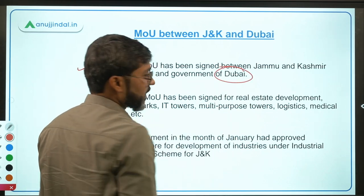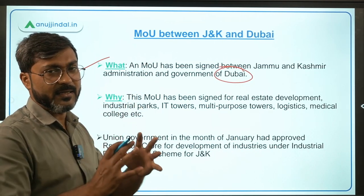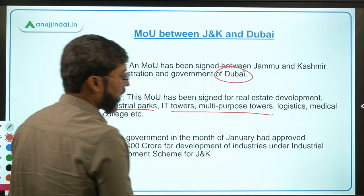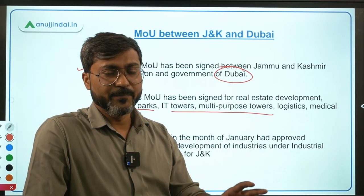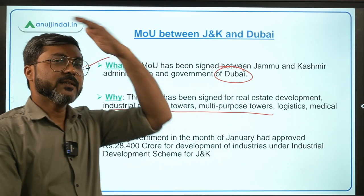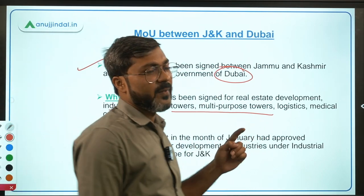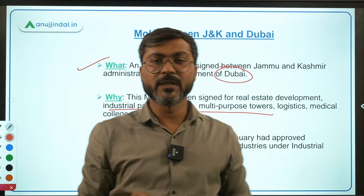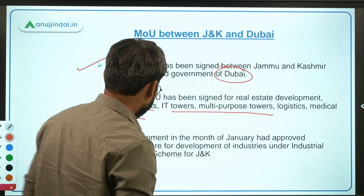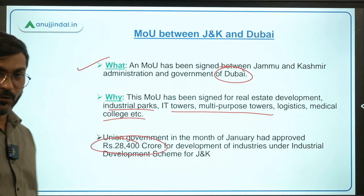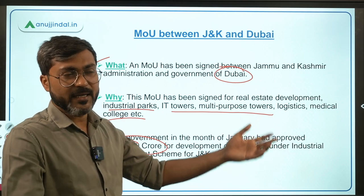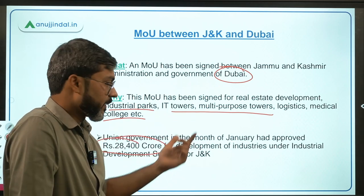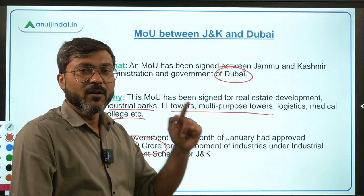The MOU with Dubai aims at developing industries and various infrastructure in Jammu and Kashmir, including real estate development, industrial parks, IT towers, multi-purpose towers, logistics, and medical colleges. Also remember, in January 2021, the Union Government launched a central sector scheme for development of industries in J&K, with an allocation of Rs. 28,400 crore. Everything related to industries and infrastructure will be developed under this central sector scheme.